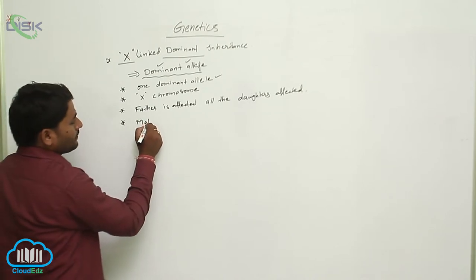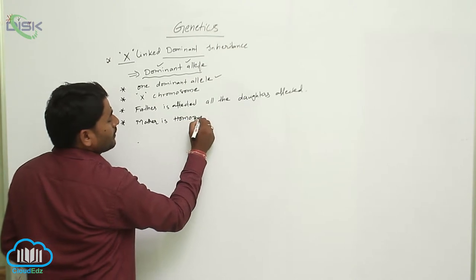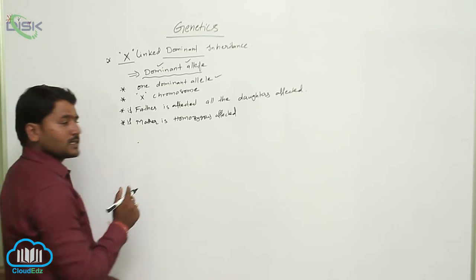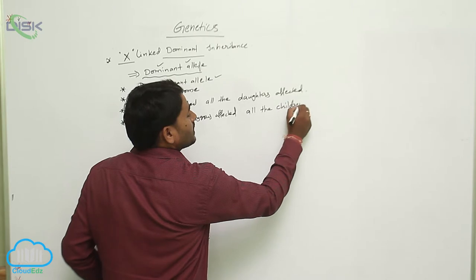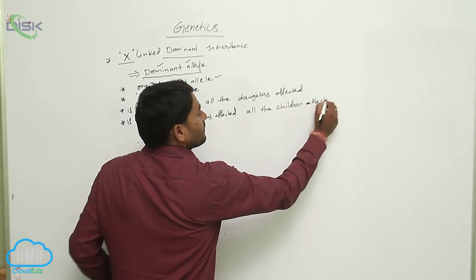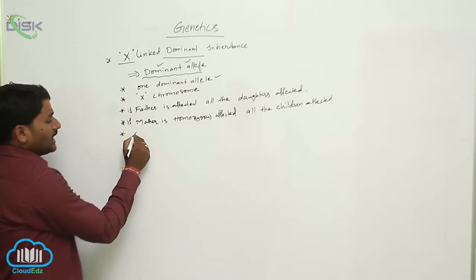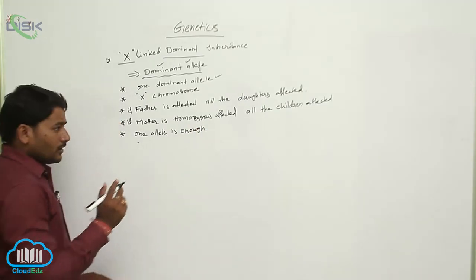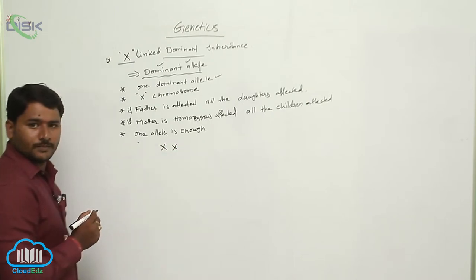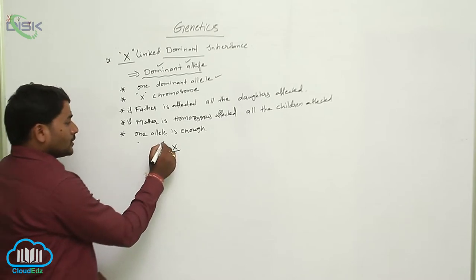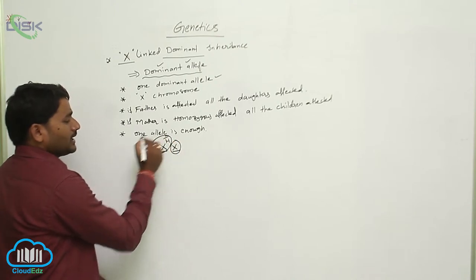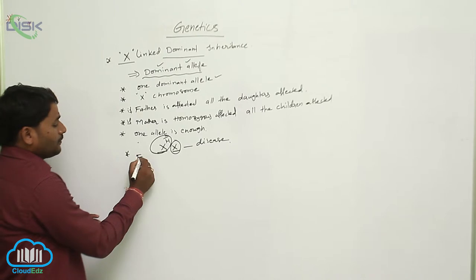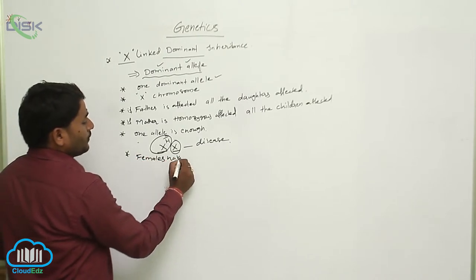If the mother is homozygous affected, all the children will be affected. In females, one allele is enough for the disease, because females have two X chromosomes. If any one of these two X chromosomes carries the dominant allele, that will cause the disease. So females have more chances of getting the disease.